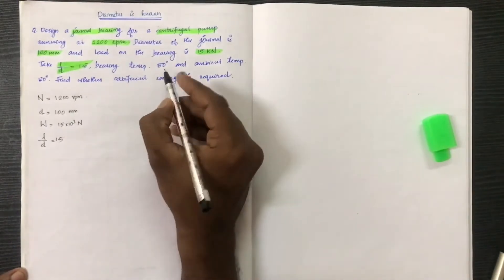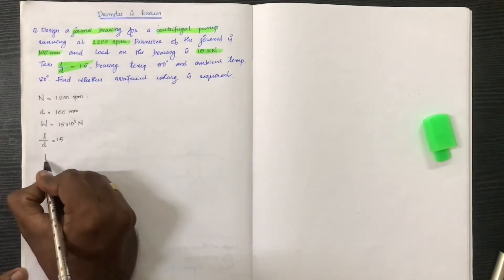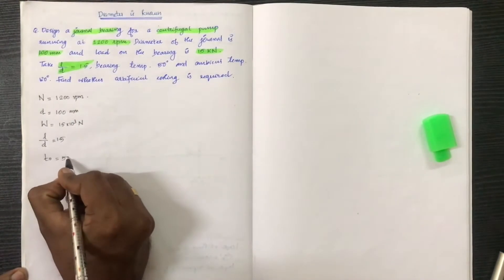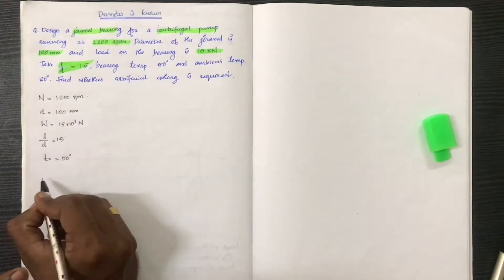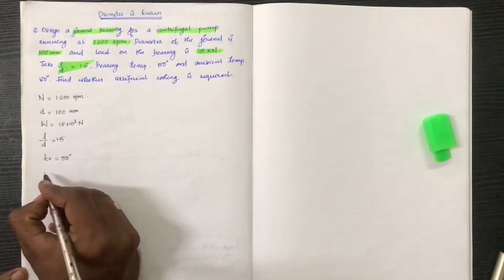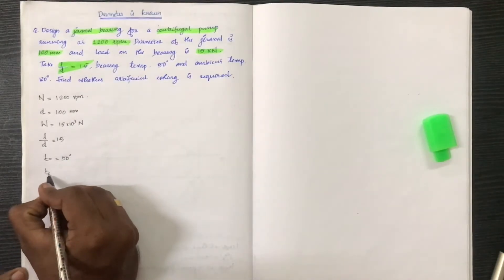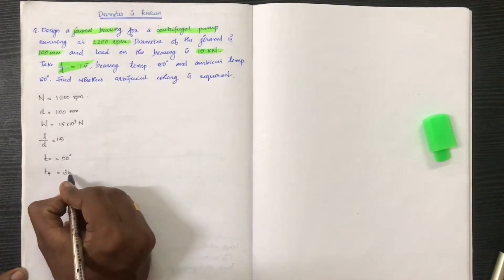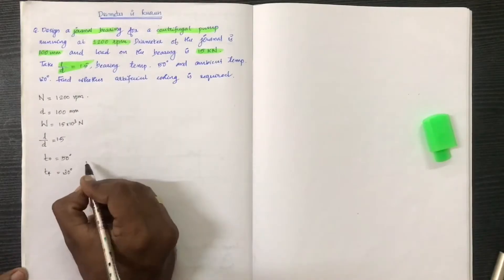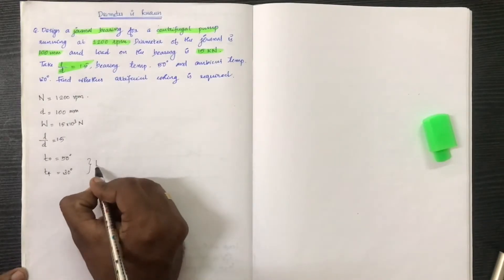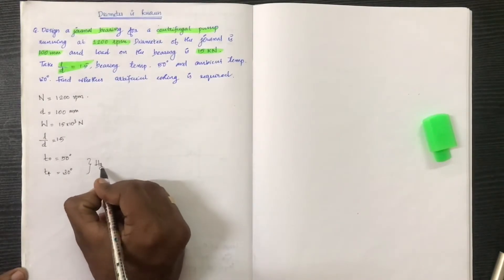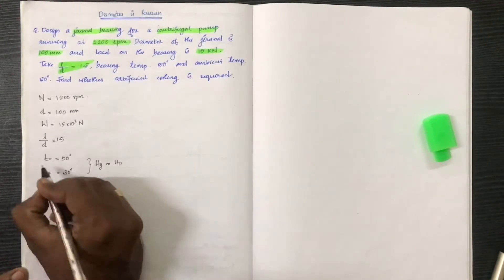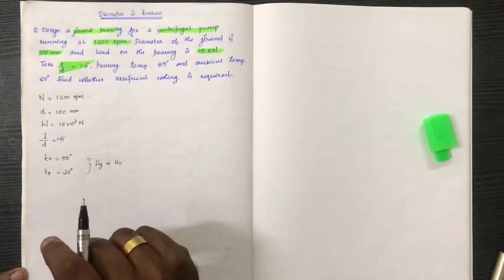The bearing outlet temperature T_o is equal to 50 degrees, and the ambient temperature T_a is equal to 30 degrees.